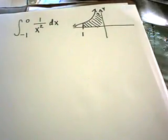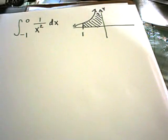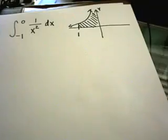The idea is pretty much the same as in the other examples. What we're going to do is we're still going to turn it into a limit problem.